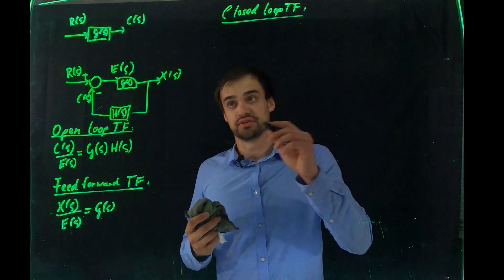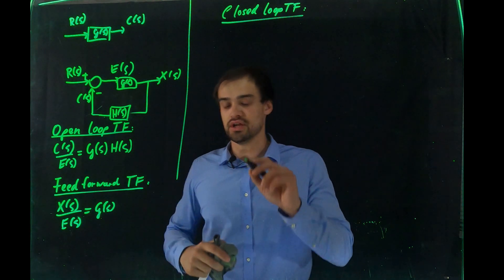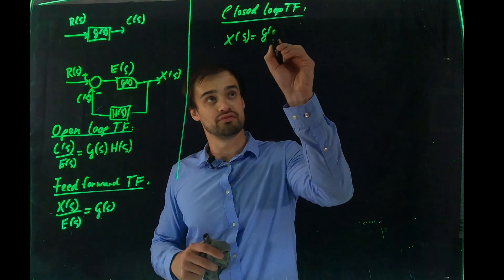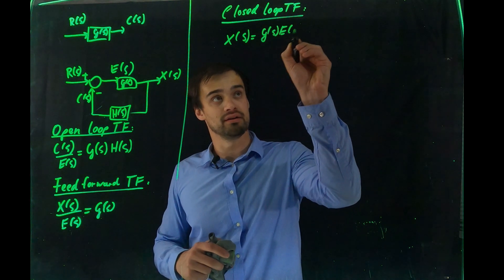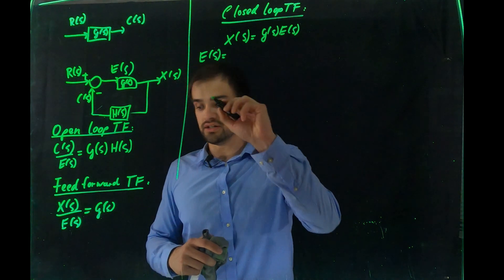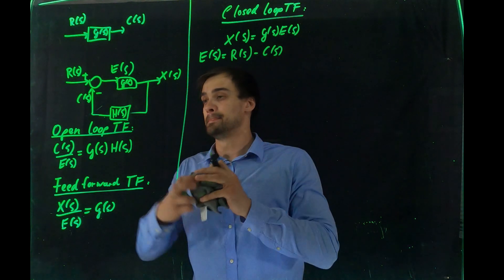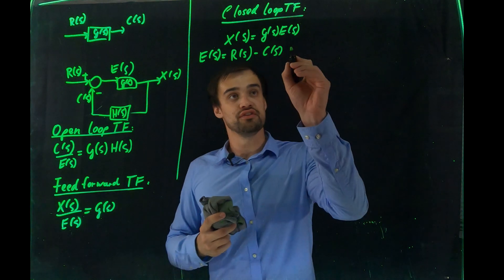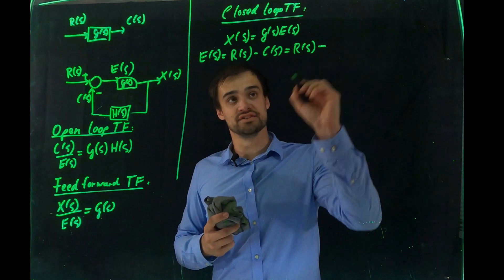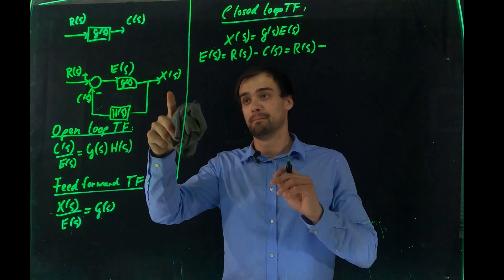Let me write the system down. From the diagram we can state that X(S) equals G(S) multiplied by E(S). Furthermore, E(S) equals R(S) minus C(S). So R(S) minus C(S) equals E(S).